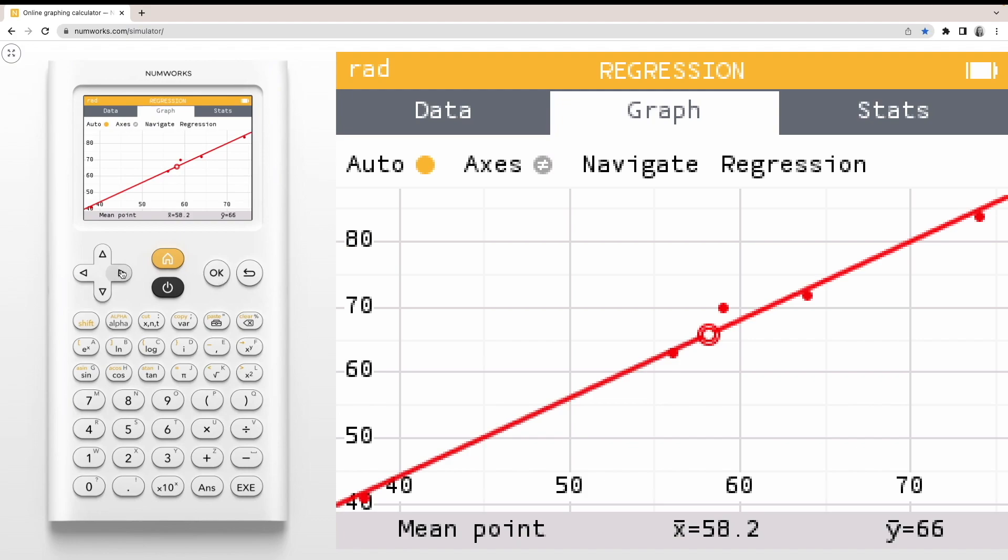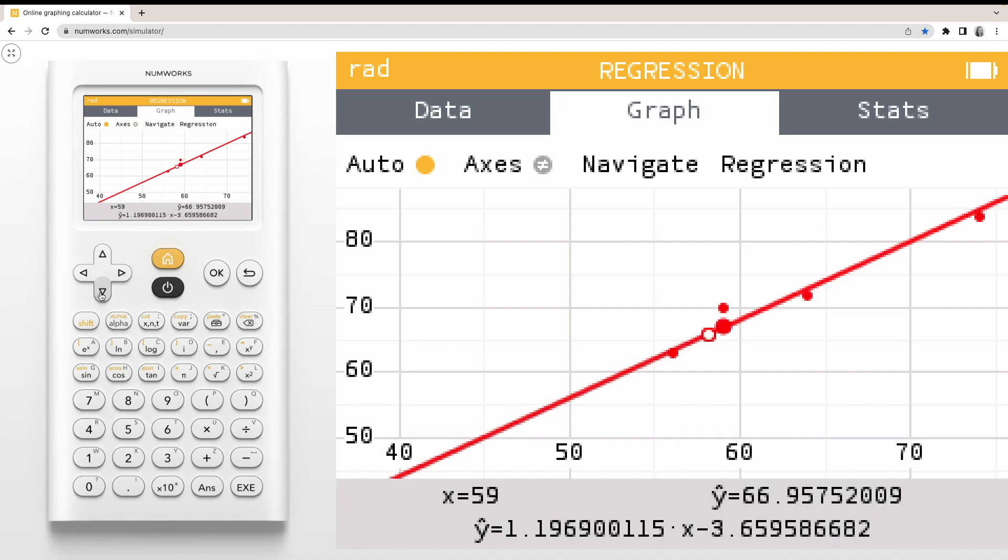Once the regression model is selected, use the left and right arrows to navigate through the data set. Relative to where you are, you can use your up and down arrow to navigate to the regression model. Once on the model, you can use your left and right arrows to trace the model.